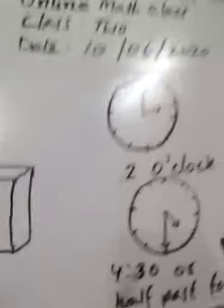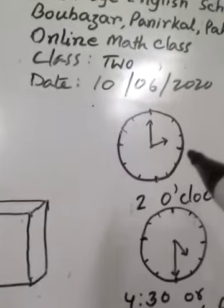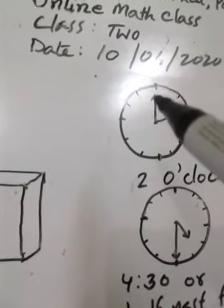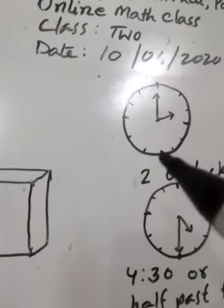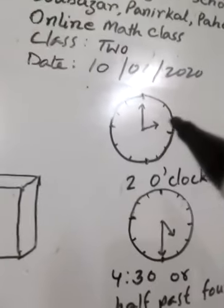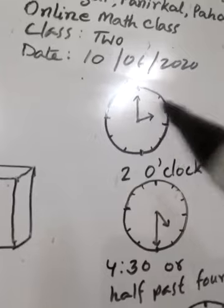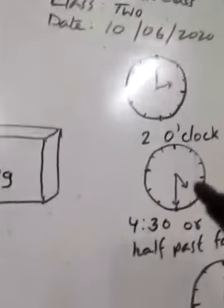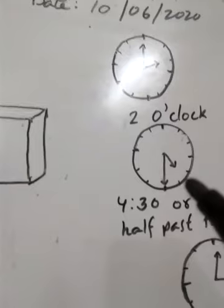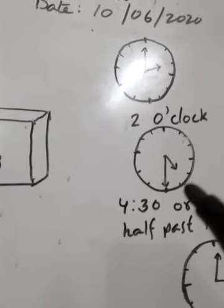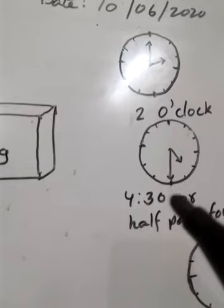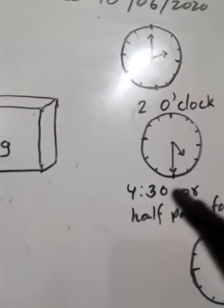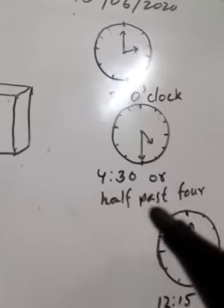Now see the time. The clock has 12, 3, 6, and 9. Now it's 2 o'clock — the long hand is on 12 and the short hand is on 2, that is 2 o'clock. Here, the short hand is between 4 and 5, and the long hand is on 6, which means 30 minutes — so it's 4:30. We can say half past 4.